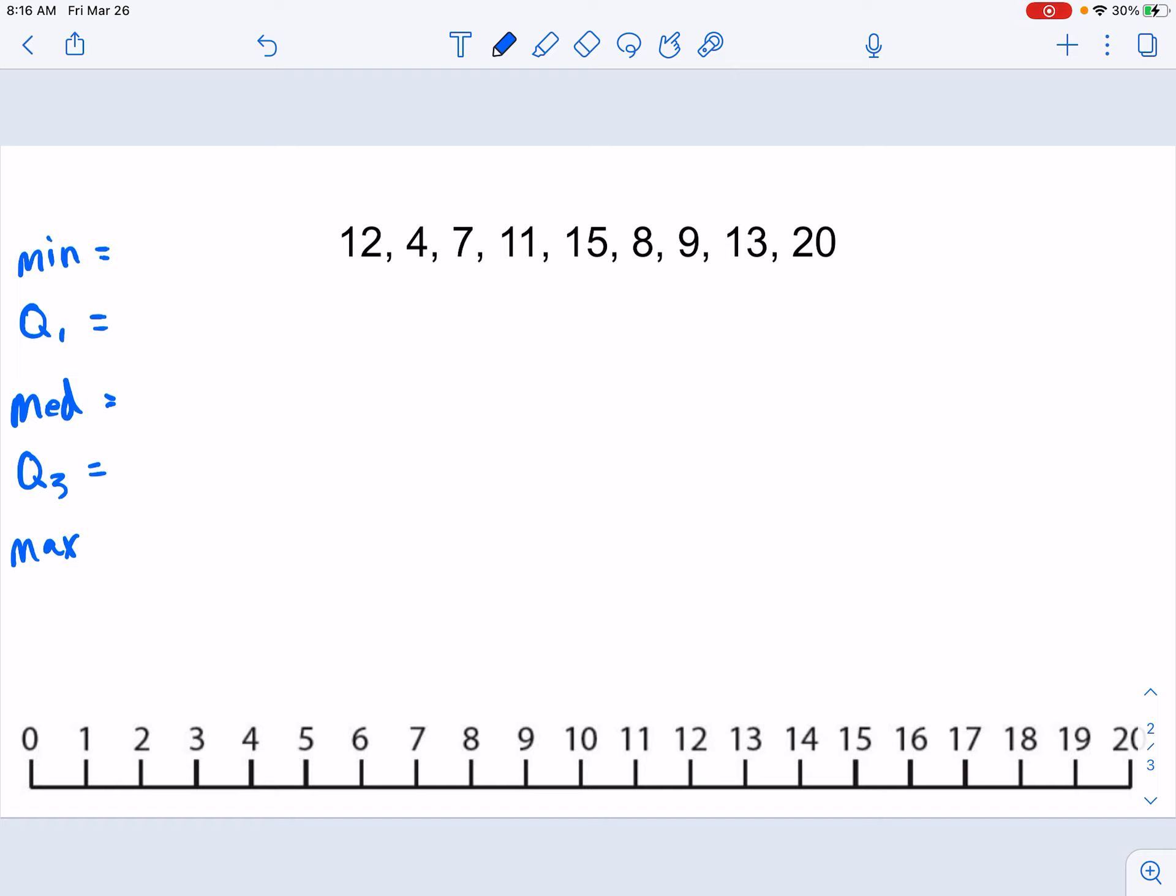What we have to do is we first need to put our numbers in order from least to greatest. So 4, 7, 8, 9, 11, 12, 13, 15, and 20.